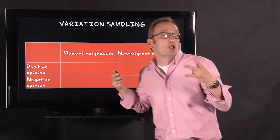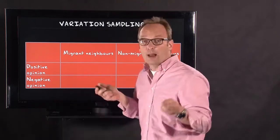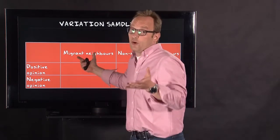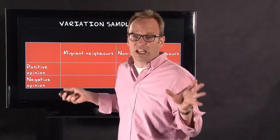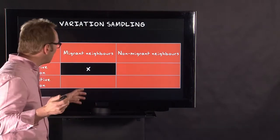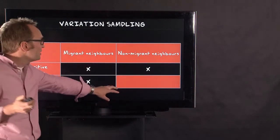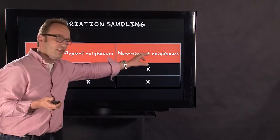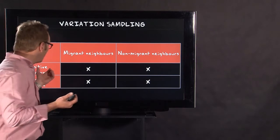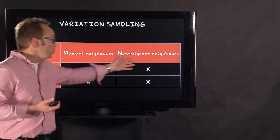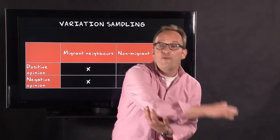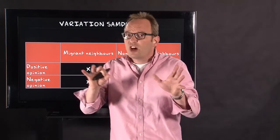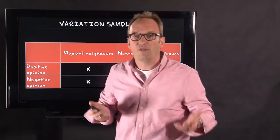For instance, if you pose the question based on Allport's contact hypothesis that living next to migrants, for instance, gives a more positive opinion on migrants in general, then you can use something like this. And what you do then is you try to fill each and every cell. So you talk to people with non-migrant neighbors that have a negative opinion, or you talk to people that live near non-migrant neighbors and have a positive opinion on migrants in general. You try to have the full range, not the percentages of the population, you just want the range of possibilities. And this is called variation sampling.